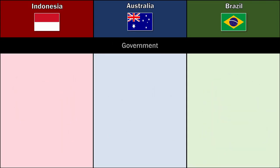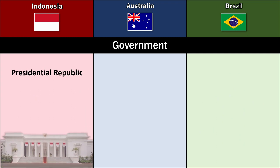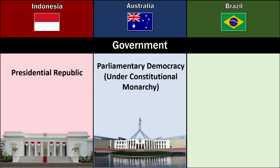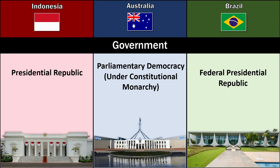Government: Indonesia — Presidential Republic. Australia — Parliamentary Democracy under Constitutional Monarchy. Brazil — Federal Presidential Republic.